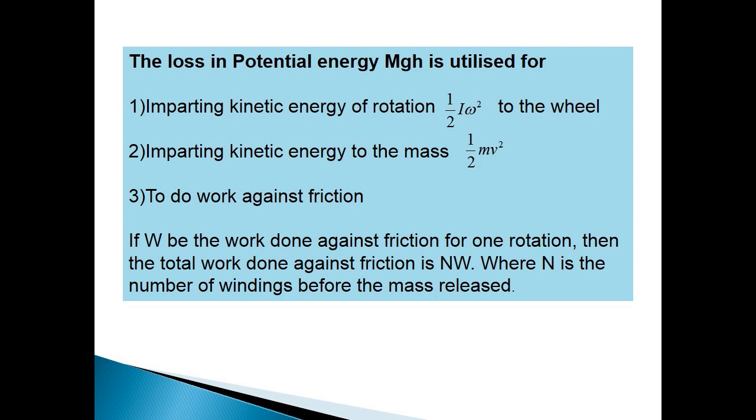If capital W is the work done against friction for one rotation, then the total work done against friction is capital NW, where capital N is the number of windings before the mass is released.